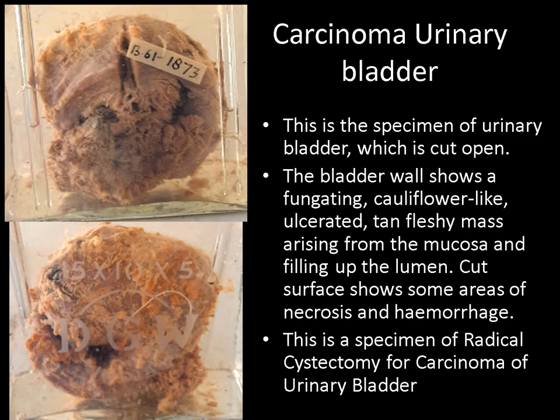This is a specimen of urinary bladder which is cut open. The bladder wall shows a fungating polypoidal ulcerated mass arising from the mucosa and filling up the entire lumen of the urinary bladder. The cut surface shows necrosis and hemorrhage. Since you can see the entire urinary bladder in this specimen, this is a radical cystectomy specimen done for carcinoma of the urinary bladder.